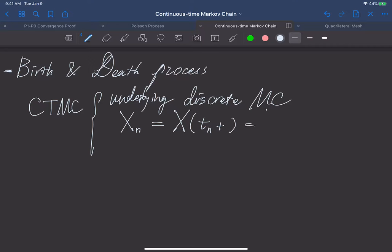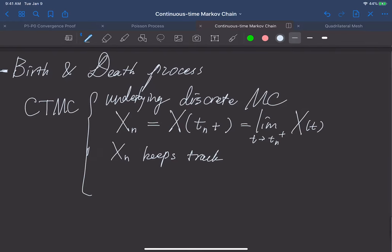And we can see that in this one, essentially what happens is X sub n is the underlying discrete Markov chain which keeps track of the state changes after each transition.